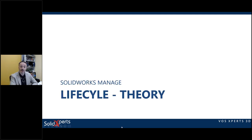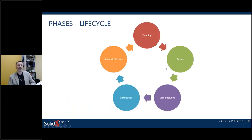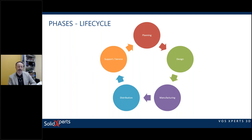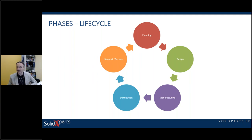Let's start right away. In a lifecycle, we have five phases. As you can see, it's more like a wheel than a straight line — there's no finish line with a lifecycle. When you go from planning, then design, then manufacturing, then distribution or delivery depending if it's a project or product, and then support and services, you go back to planning. You'll obviously be turning the wheel continuously.